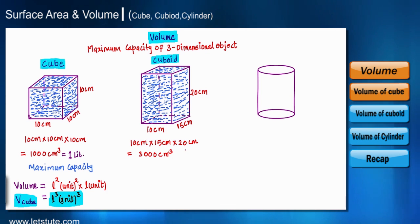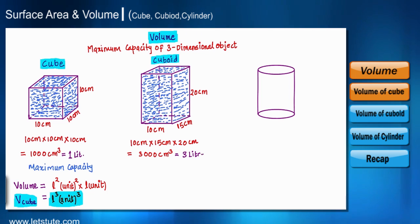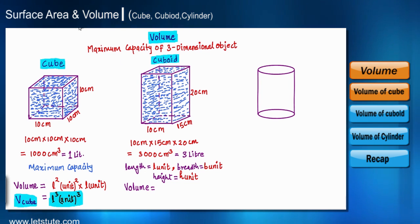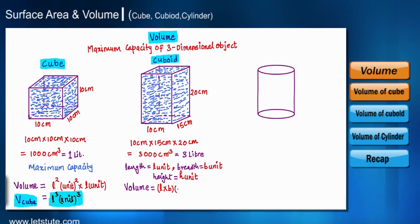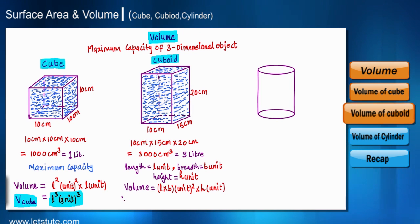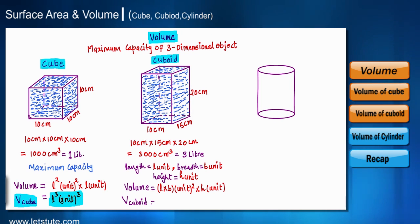So the volume of this shape is 3000 centimeter cubed or 3 liters. Let's generalize: taking length as l, breadth as b, and height as h — since all dimensions are different, we use different letters. The bottom surface is rectangular, so the area of the base is l into b. Multiplying by height h gives the volume of the cuboid: l into b into h unit cubed.